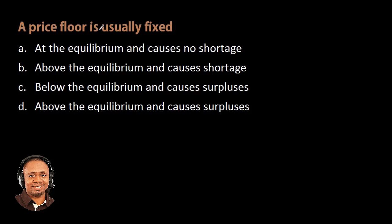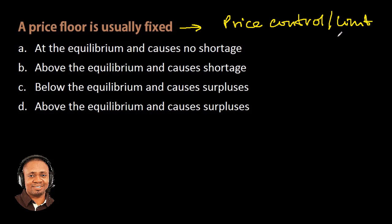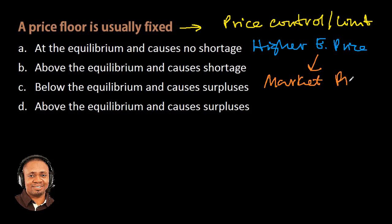The question goes: a price floor is usually fixed. A price floor is a government or group imposed control price or limit on how a price can be charged for a product, good, commodity or service. A price floor must be higher than the equilibrium price in order for it to be effective, and this equilibrium price is usually called the market price. The market price is usually governed by two economic factors,